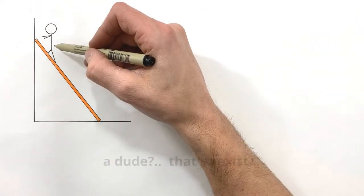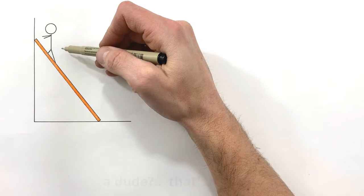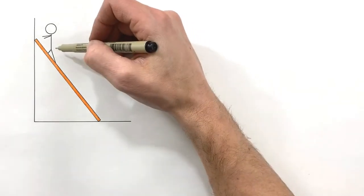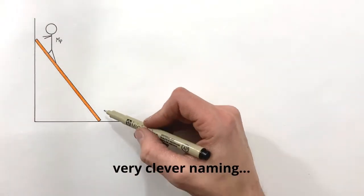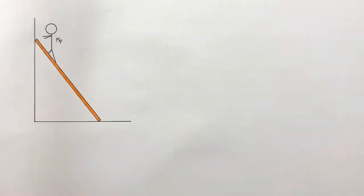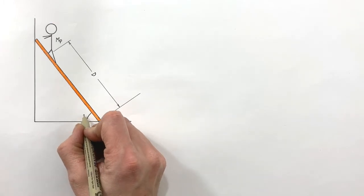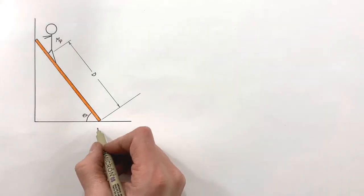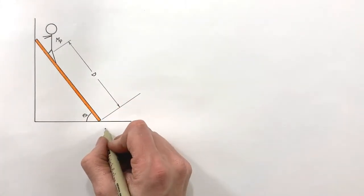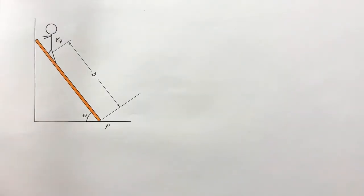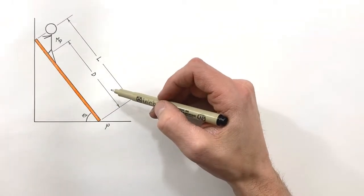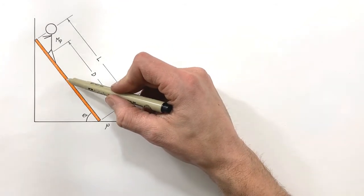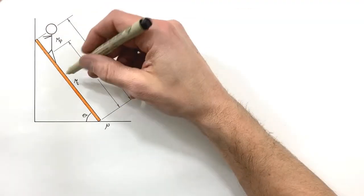The way this problem goes: we take a person and let them walk up a ladder. That person has some mass — we'll call it mp for mass of the person — and they are some distance d up the ladder. This ladder makes an angle theta with the ground. There's also a coefficient of friction mu between the ladder and the ground, and the ladder is l long. We're also going to give this ladder some mass, which we'll call ml.